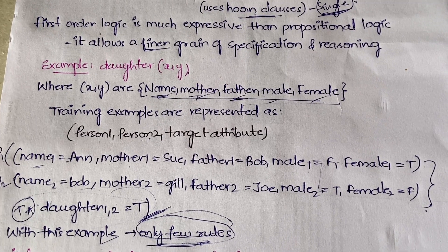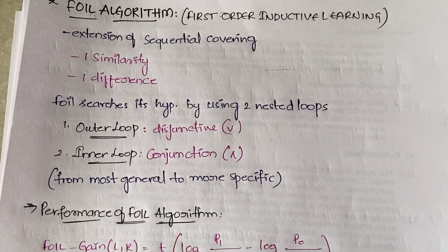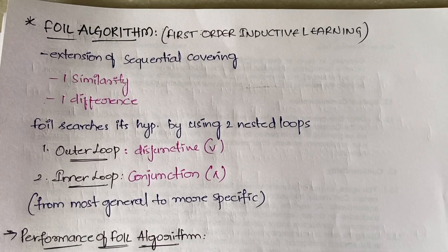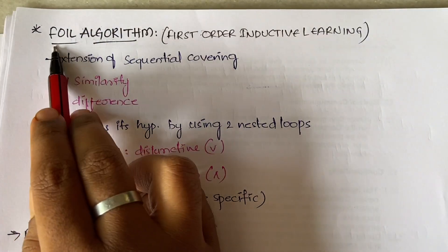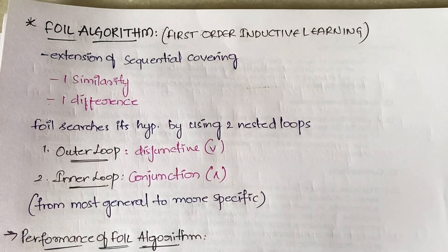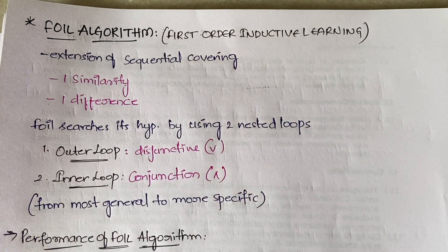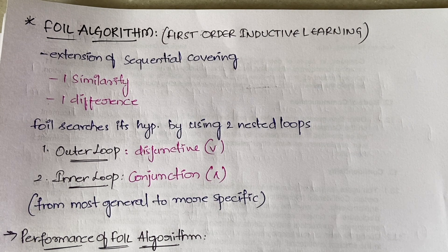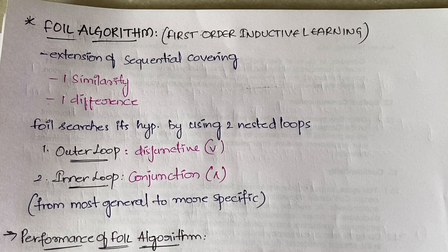Now let's move to the FOIL algorithm. FOIL stands for First Order Inductive Learning — F is First, O is Order, I is Inductive, and L is Learning. FOIL is an extension of the sequential covering algorithm.